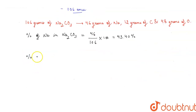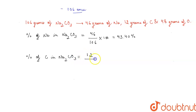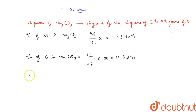Percentage of carbon in sodium carbonate will be 12 divided by 106 into 100, which will give the value 11.32 percent.